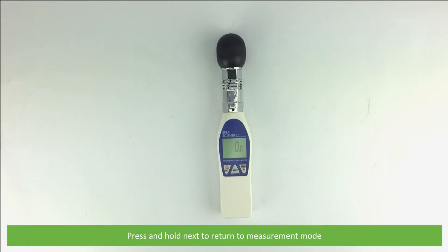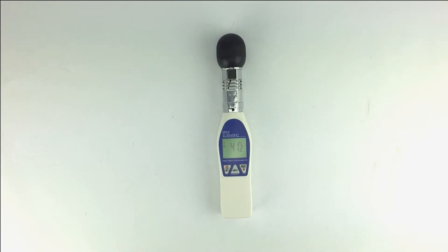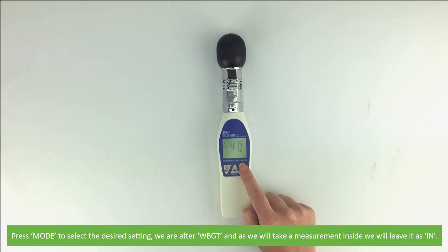Press and hold NEXT to return to measurement mode. Press MODE to select the desired settings. We are after wet bulb globe temperature, WBGT, and as we'll be taking a measurement inside, we will leave it as in.